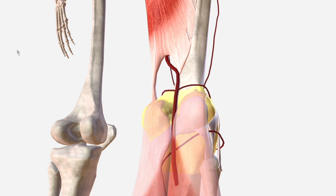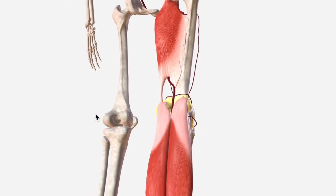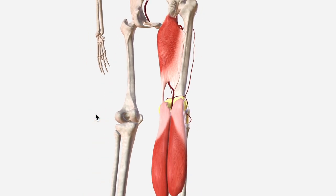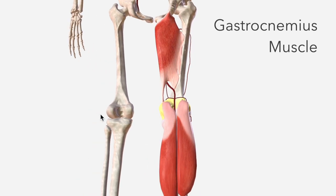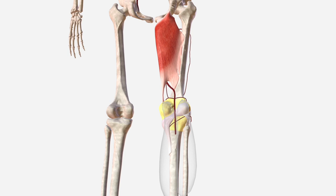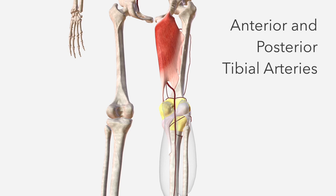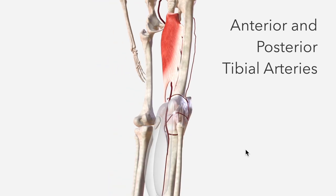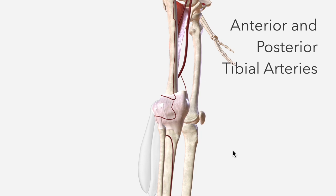If we continue inferiorly, it moves between the two heads of the gastrocnemius muscle, which we're going to make transparent so that we can see how the popliteal artery eventually terminates by bifurcation into the anterior and posterior tibial arteries. Some of the blood passing through the popliteal artery then goes on to supply the calf and the foot.